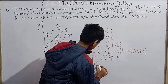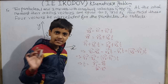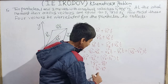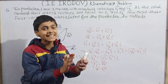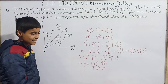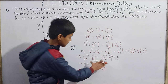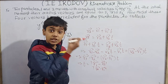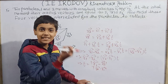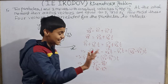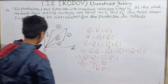Rearranging: vector r₁ minus vector r₂ equals vector v₂·t minus vector v₁·t, which gives vector r₁ minus vector r₂ equals (vector v₂ minus vector v₁)·t. Solving for t: t equals the magnitude of (vector r₁ minus vector r₂) divided by the magnitude of (vector v₂ minus vector v₁). We must take the magnitude because time is always positive — it can never be zero or negative. Time always moves forward.